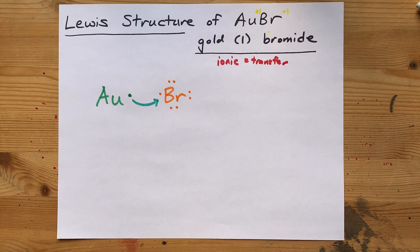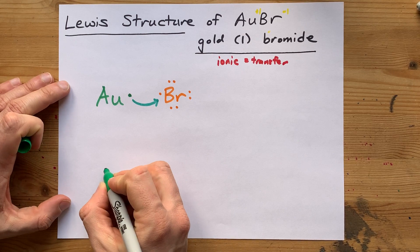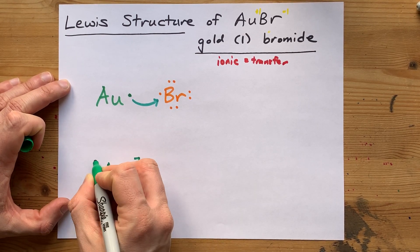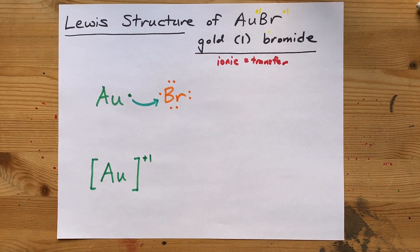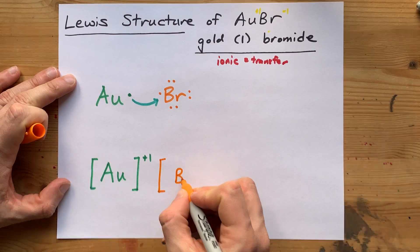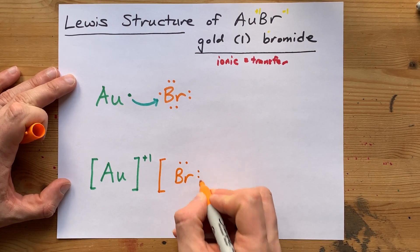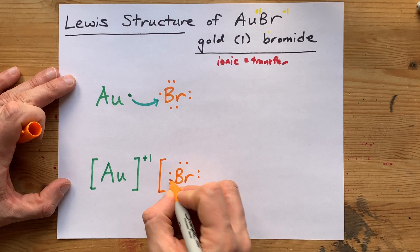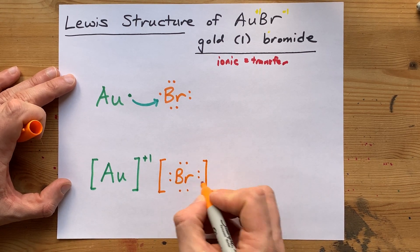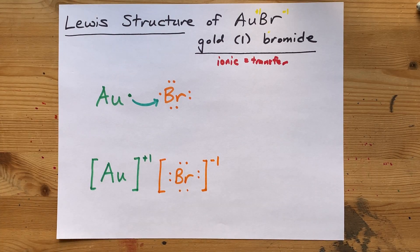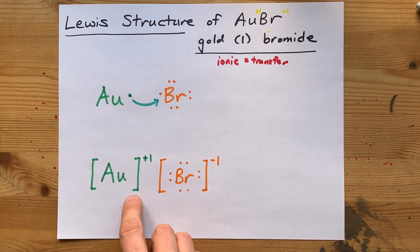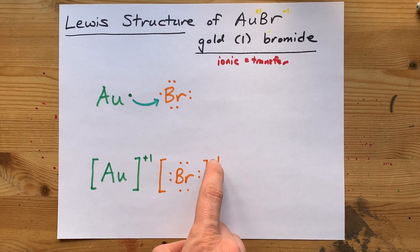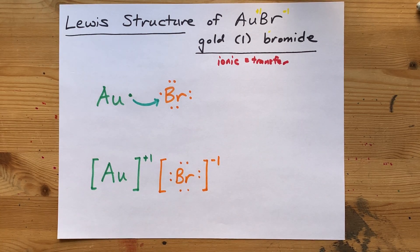Gold will get written without that electron, and because it lost 1 electron, it gets a charge of plus 1. Bromine had 7 valence electrons and gained 1 more in this transfer — there's the 8th. That 1 extra electron gives it a charge of minus 1. This is the completed Lewis structure. We put each ion in square brackets with its charge — that's how Lewis dot diagrams get written.